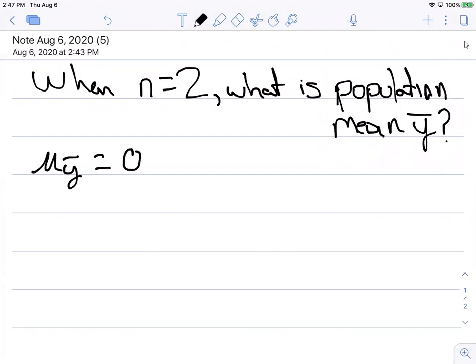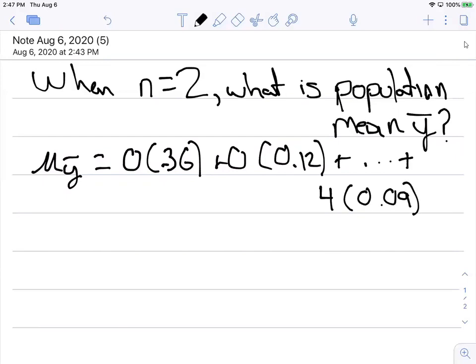So again, remember looking at our table, we have 0 times 0.36, plus 0 times 0.12, plus, and I'm getting lazy so I'm going to write dot dot dot, a lot of other values to sum, the last one being 4 times 0.09. So we're going to take all those values and multiply them and sum them up together.